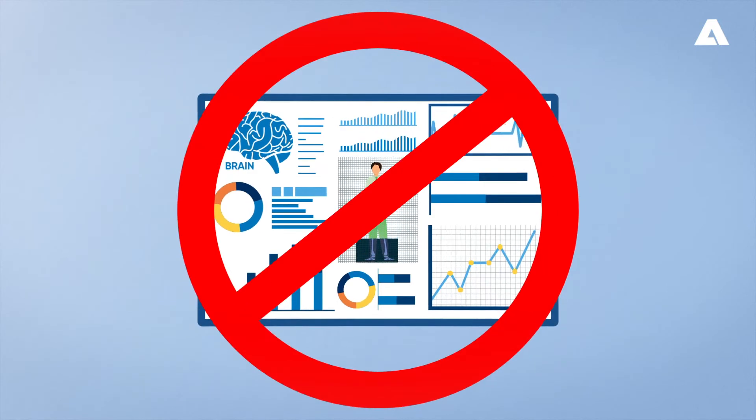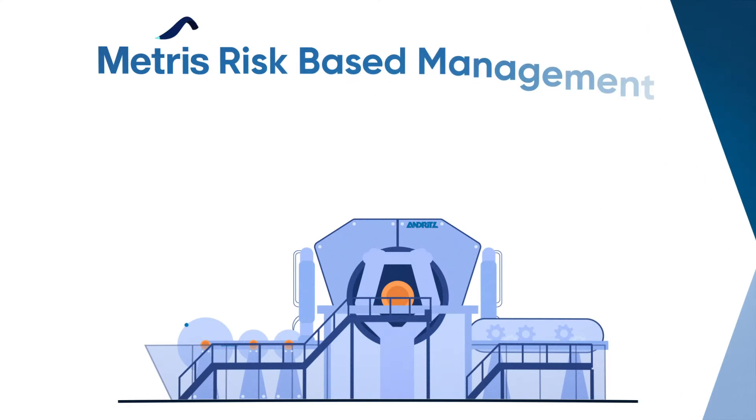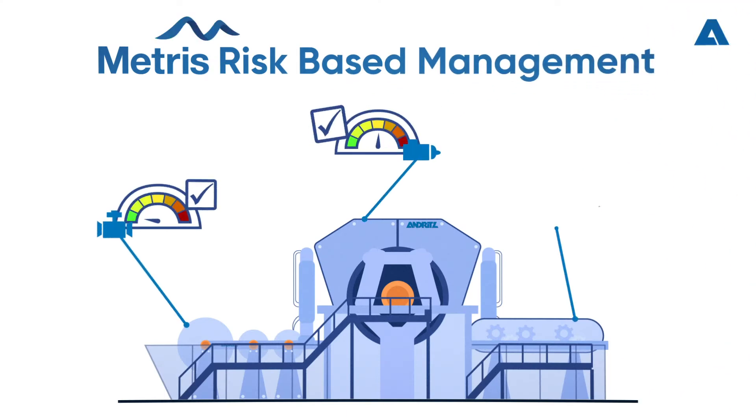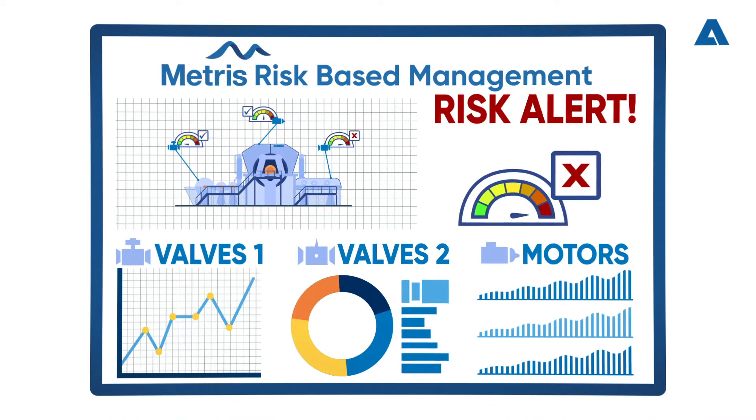This is not possible yet for our body, but is a reality for industrial mills. Metris Risk-Based Management identifies the overall risks upfront, proposing the right tasks for fixing and therefore avoiding unnecessary interruptions.